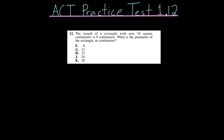The twelfth problem of this first ACT practice test focuses mainly on areas and perimeters. The length of a rectangle with area 54 square centimeters is 9 centimeters. What is the perimeter of the rectangle in centimeters?